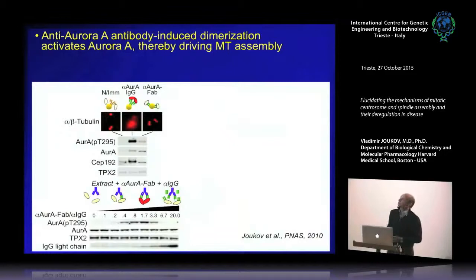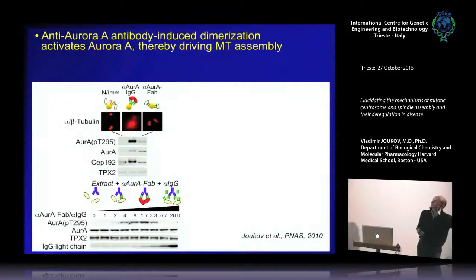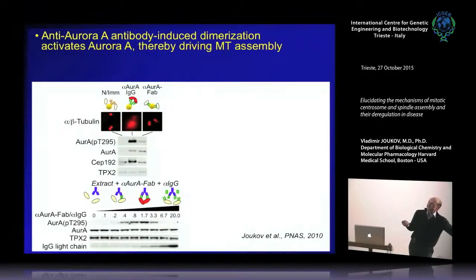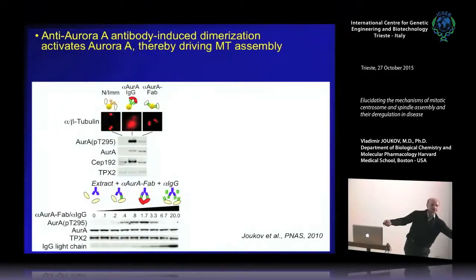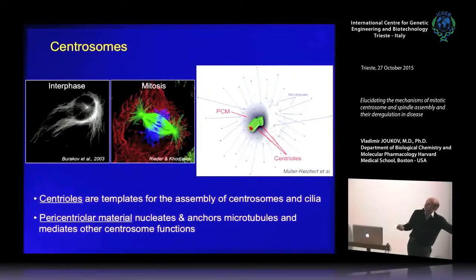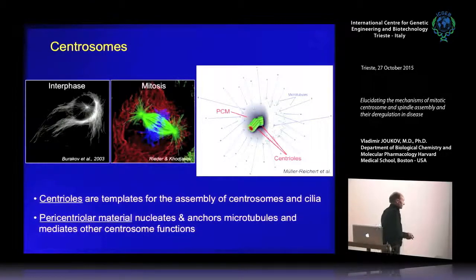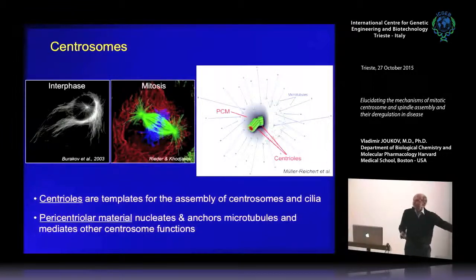Very soon we made two important surprising observations. First, anti-Aurora beads promote Aurora activation via T-loop phosphorylation, and this activation is essential for the beads to nucleate microtubules. Moreover, if you coat beads with a monovalent Fab fragment of the same antibody, these beads bind Aurora A but do not activate the kinase and do not nucleate microtubules. You can also induce Aurora activation in extract by bridging two Fab fragments with a secondary antibody, activating Aurora A kinase by dimerization. This led me to introduce you briefly to the centrosome field and this protein.